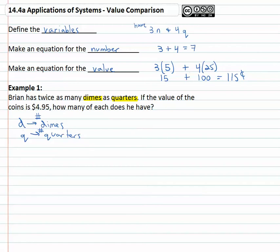We're told that Brian has twice as many dimes as quarters, so we can make an equation from that. I like to start with the thing I have more of. Since there are more dimes, I'll say dimes equals — D is the number of dimes and there are twice as many — two times the quarters Q. So D equals two Q.